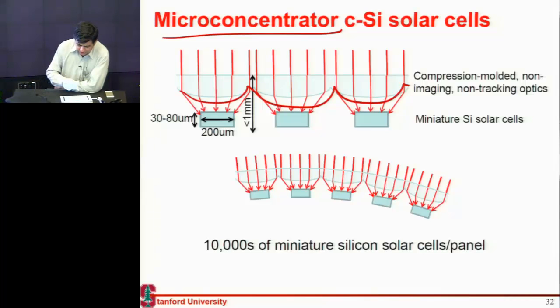The thing you need is you need thousands of these miniature cells. So this sliver kind of approach works very well with this microconcentrator. But the problem with sliver was essentially that you were never able to get very high efficiency.